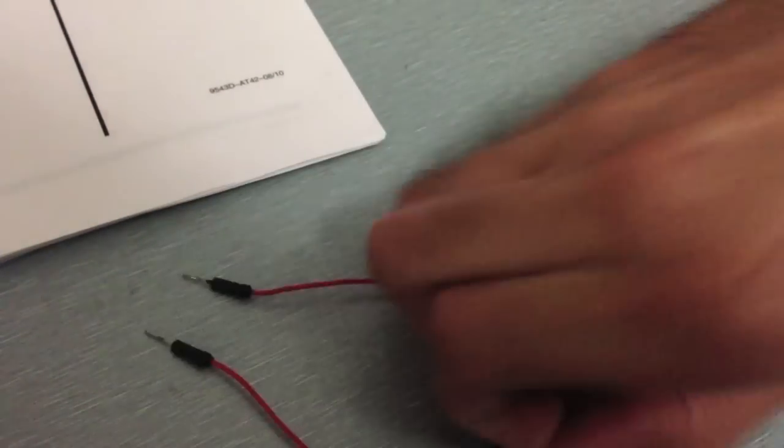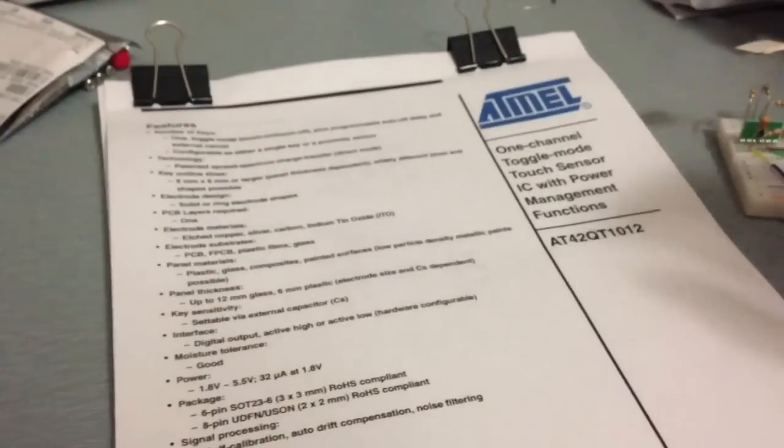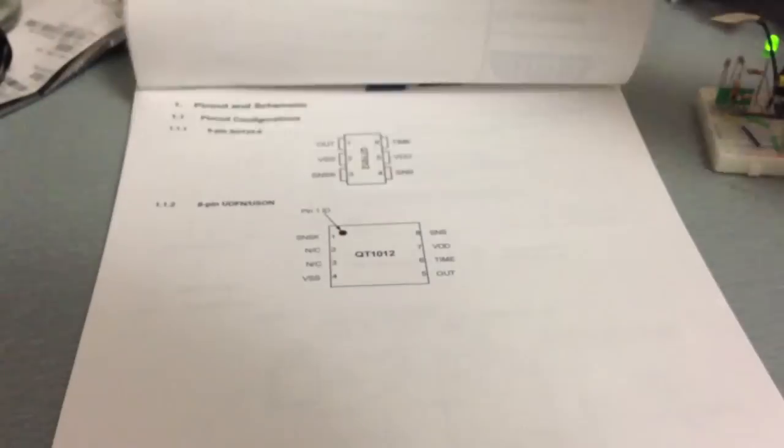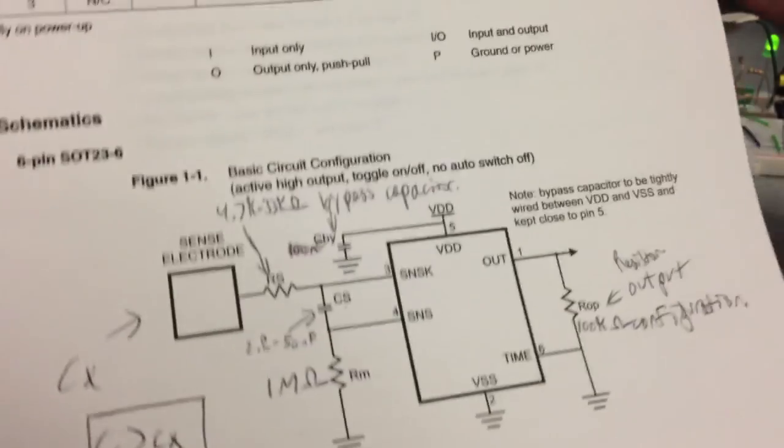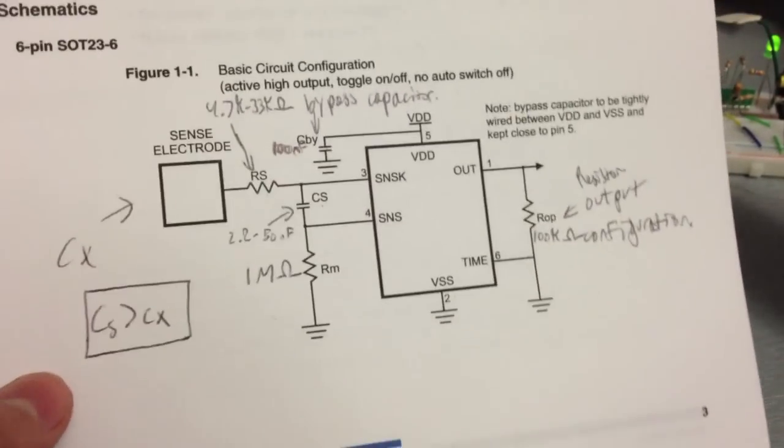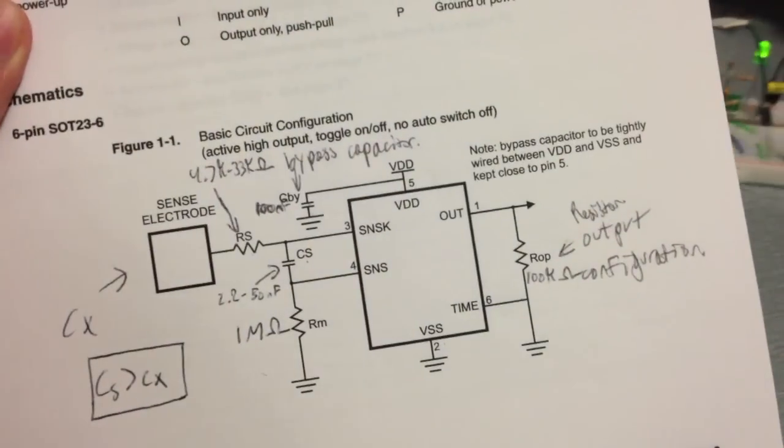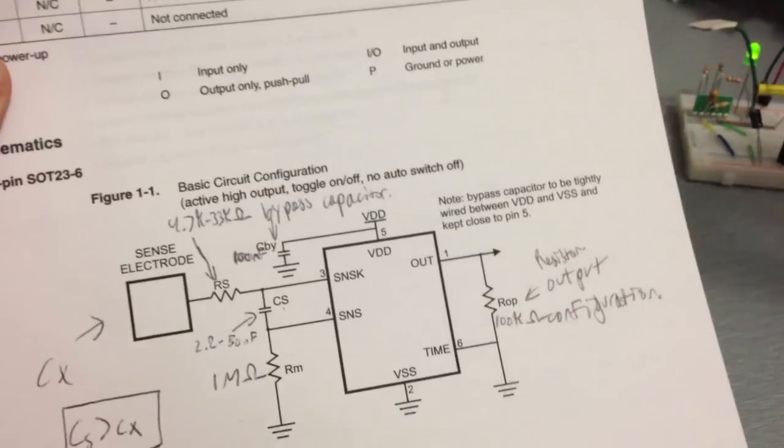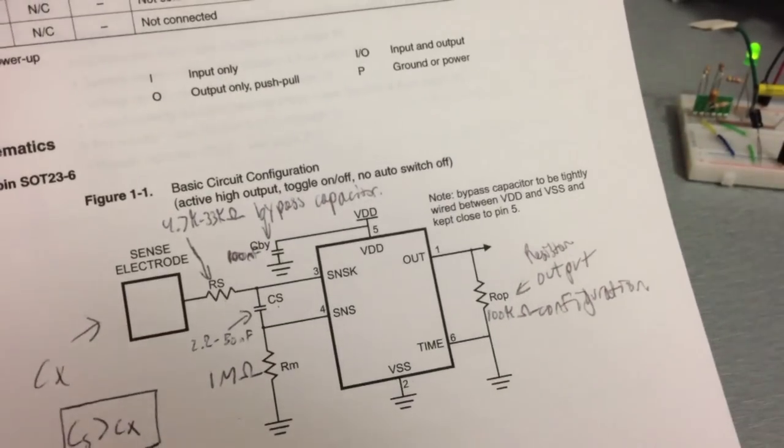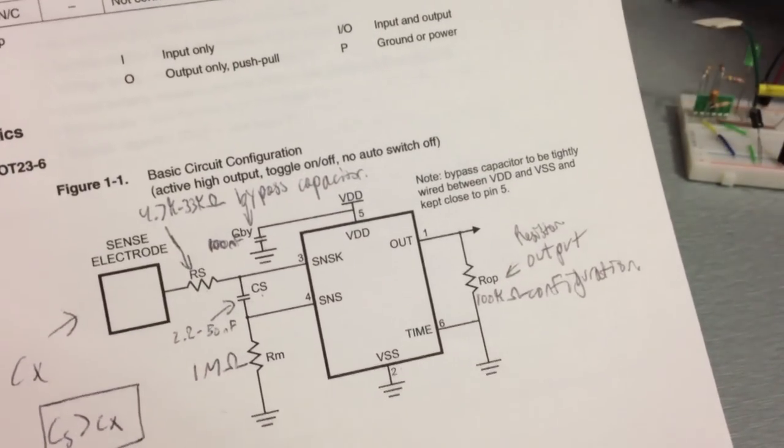This is the diagram, and I read through all the 20-something pages of it, and I found out how to use it for my use. There's different configurations. For example, you can have it where it turns on and then it'll automatically turn back off after a certain amount of time and you can set that. But I just have it toggle on and off.